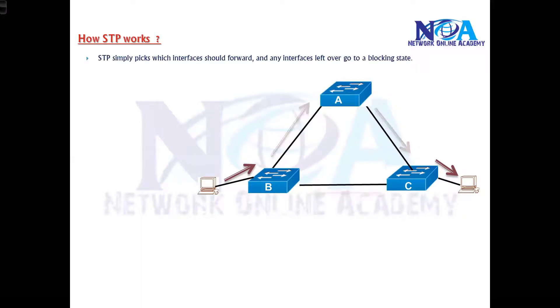The STP is going to simply pick which interface will be in the forwarding and which interface will be in the blocking state. Now we need to decide which path is forwarding, which path will be blocking to prevent the loops in this scenario.